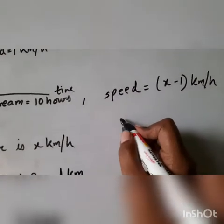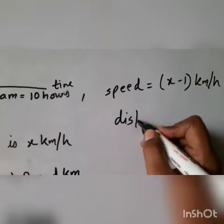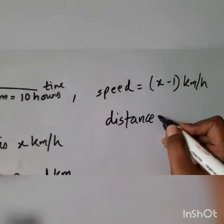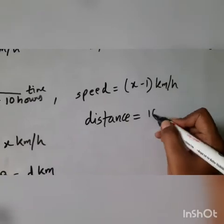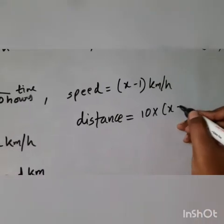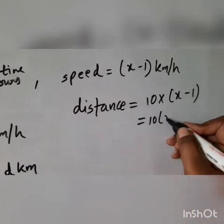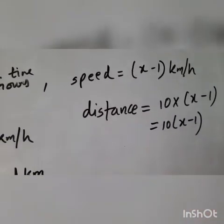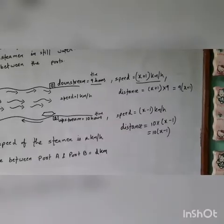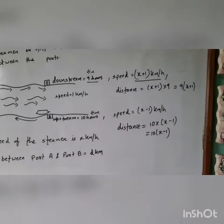We can write it like this 9(x + 1). Similarly distance for this will be 10 into (x - 1), because time is given 10 hours. So this can be written 10(x - 1).